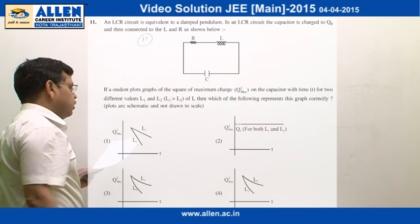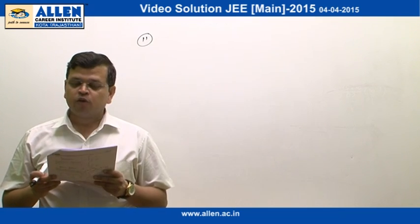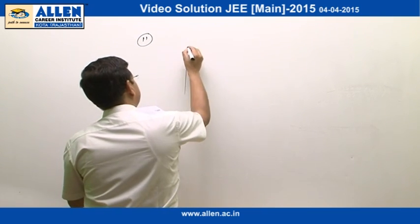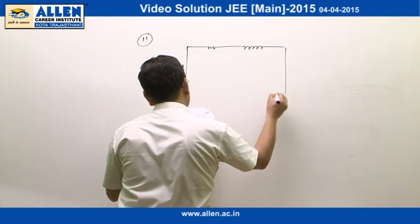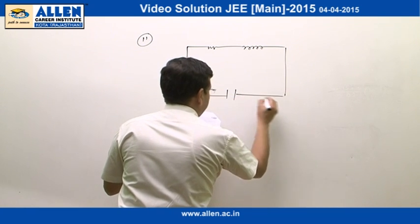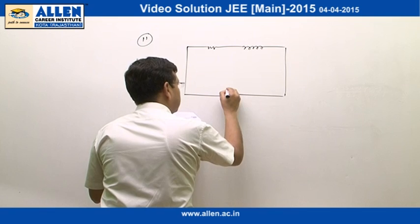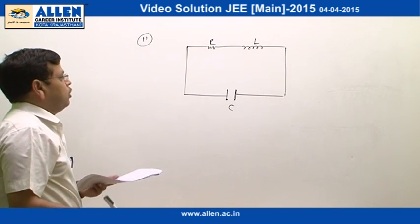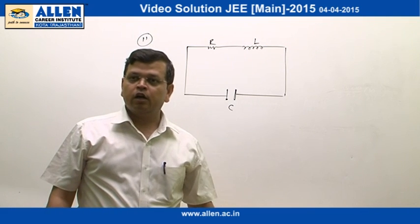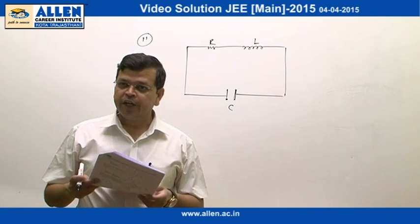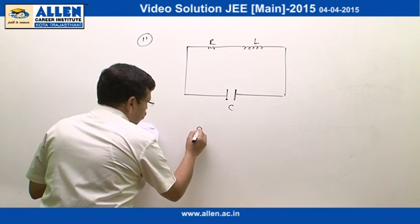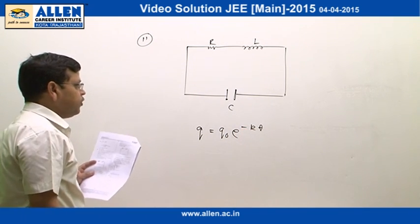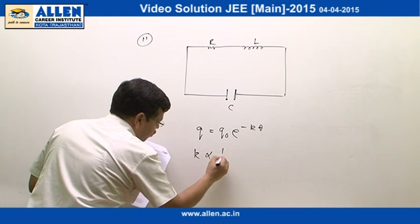Question number 11 is based on damped oscillation in an LCR circuit. We have a resistor, an inductor, and a capacitor, where the capacitor is allowed to discharge through the resistor and inductor. Because of the presence of R, the amplitude of oscillation will continuously decrease, and this amplitude is given by q = q₀ · e raised to power minus k, where k is inversely proportional to 1 by L.